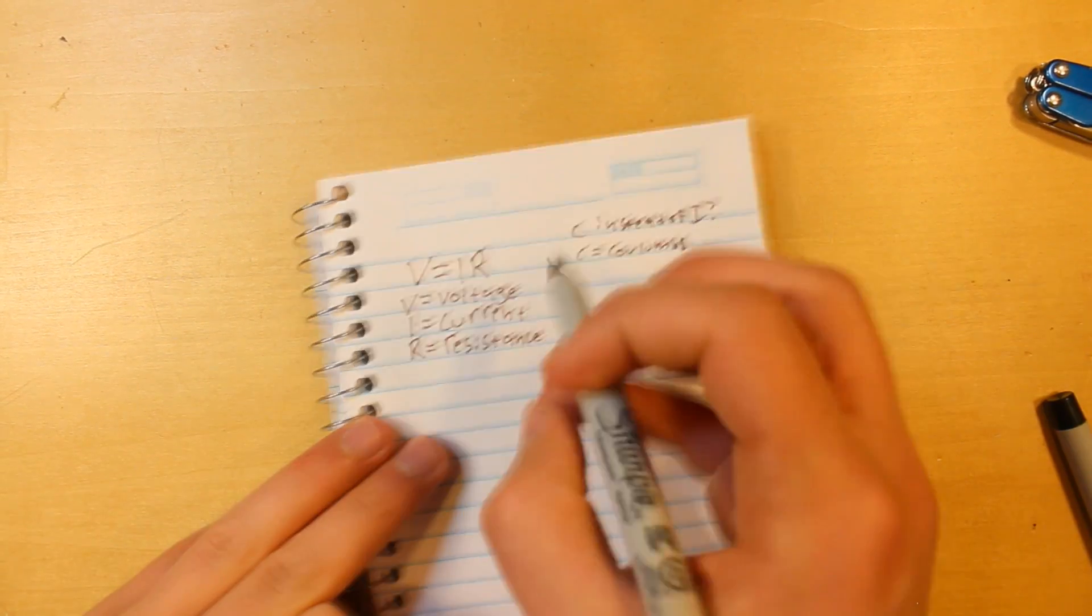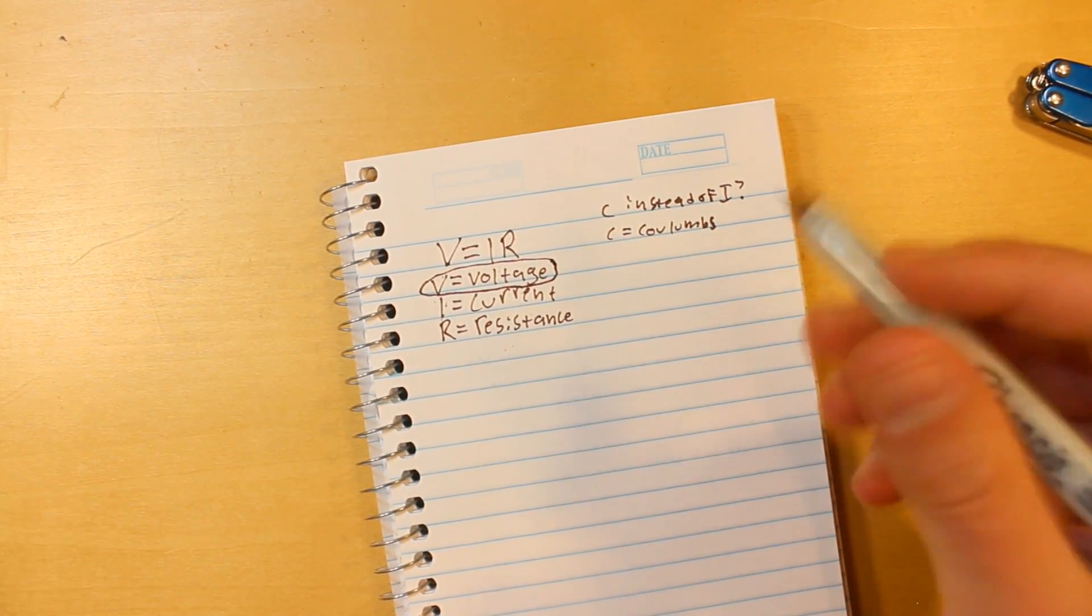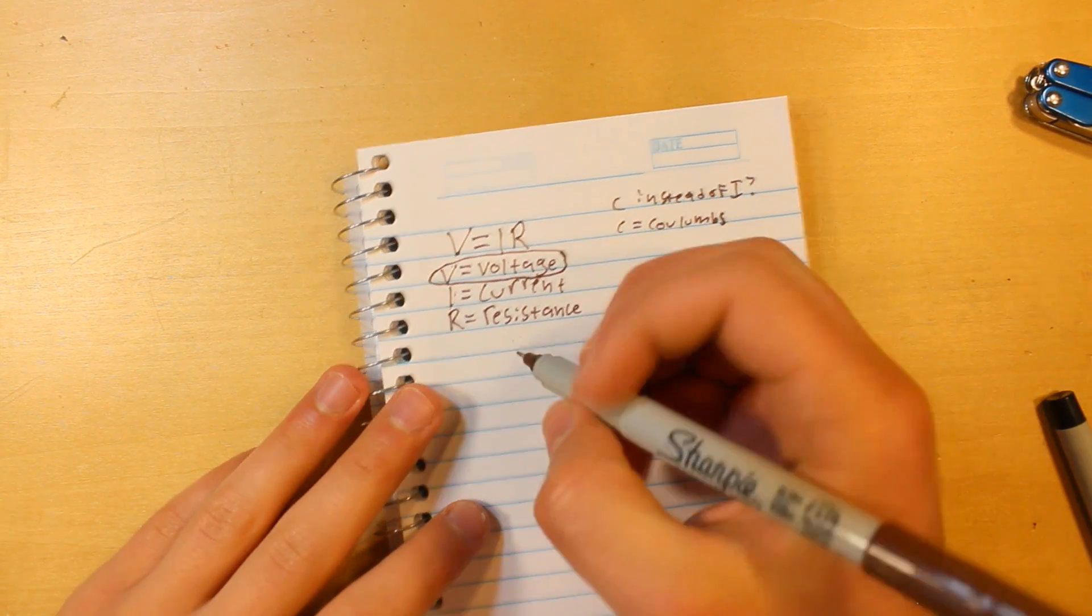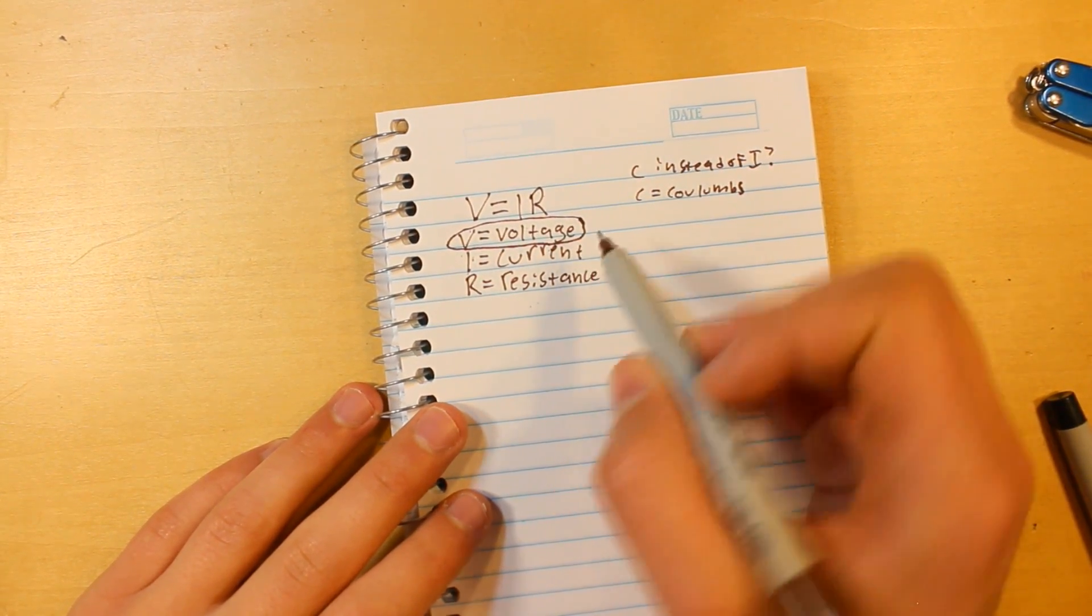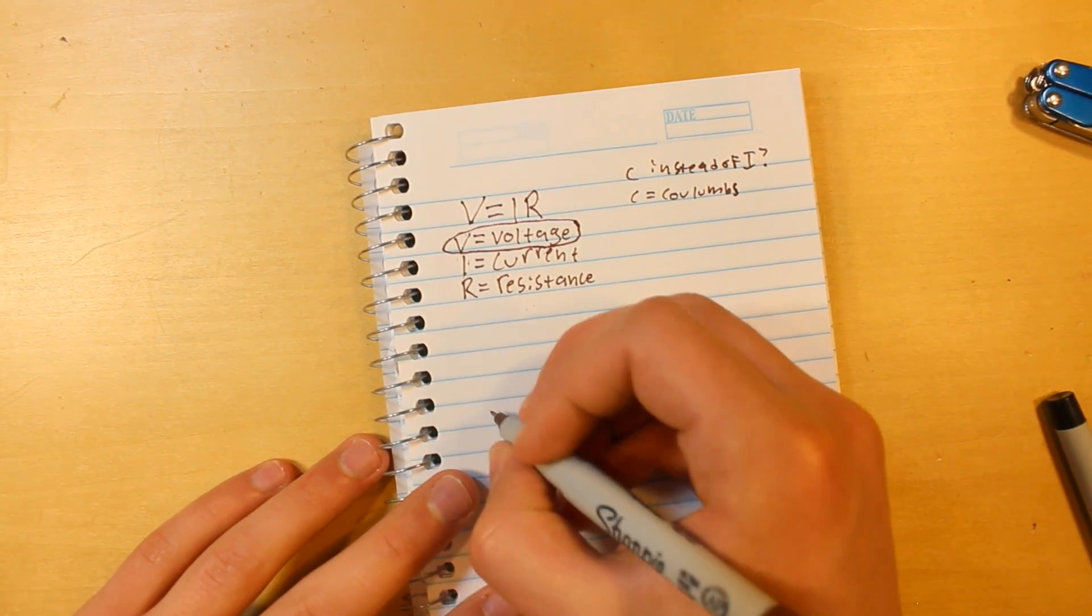Okay, so when we say voltage, what do we mean? I know that on the surface that seems like an obvious question, but it can be quite difficult. Voltage is actually the voltage of the supply minus the voltage drop of all the components.